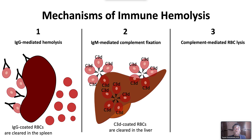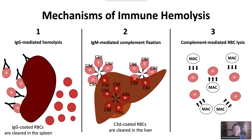The third major pathway is complement-mediated red blood cell lysis. IgG antibodies and IgM agglutinins, which bind complement, can activate the terminal complement pathway, which results in the formation of the C5b-6789 complex, or the membrane attack complex (MAC), which directly lyses red blood cells.